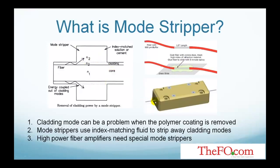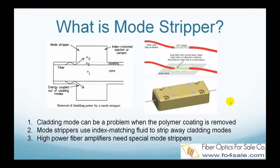In a high-power fiber amplifier made from double clad fiber, residual pump light may have to be removed in order to prevent it either from traveling along with the amplified signal or from getting back to the signal source. A special cladding mode stripper is usually used for that purpose. Cladding mode strippers for use in high-power fiber amplifiers need to be able to handle substantial optical powers. These powers must be absorbed in a long enough region so that the generated heat can be removed safely without damaging the cladding mode stripper or any other parts.